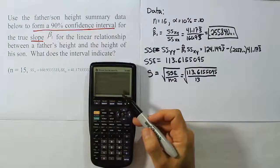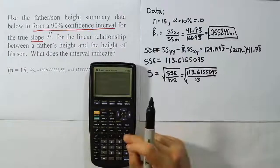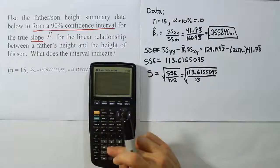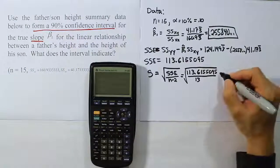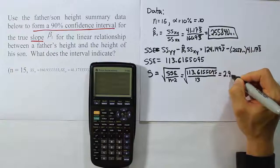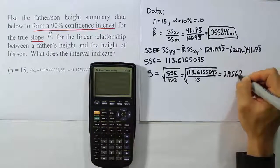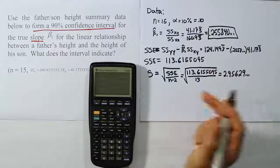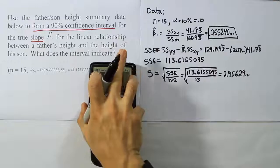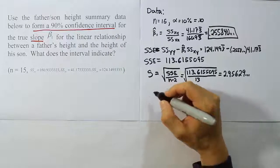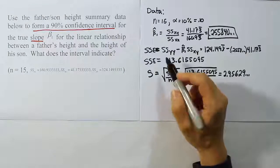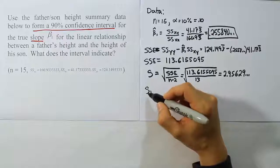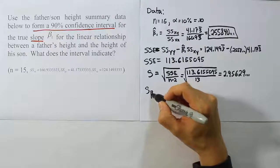So I have in my calculator 113.61, so on and so forth. I already have that value in there. I'm going to divide it by 13, the degrees of freedom. I'm going to raise that to the half power, which is the same as taking the square root. And when I'm done, I get the answer 2.95629 dot dot dot. At that point, what I want to do is to take that S value and divide it now by a certain quantity, the square root of the sum of square for XX. And that's going to give me the part that's most important for me here, which is the standard error for beta 1 hat.